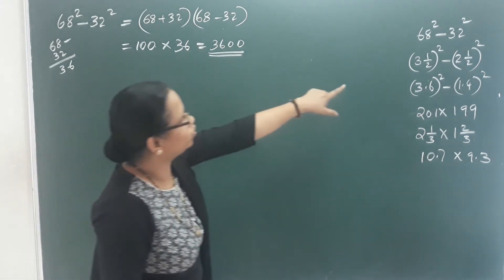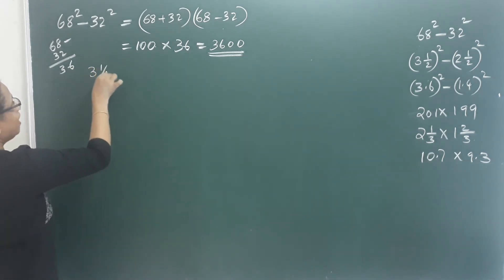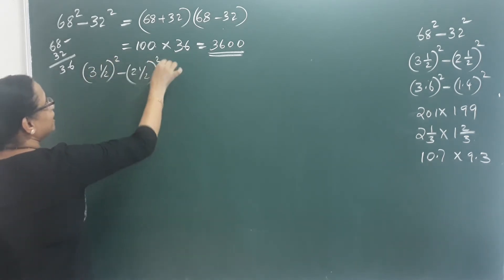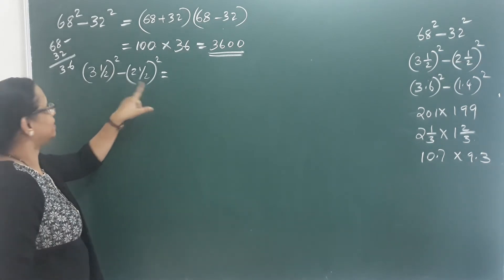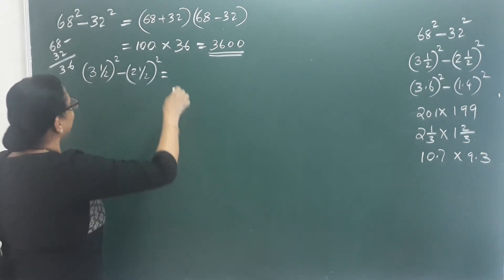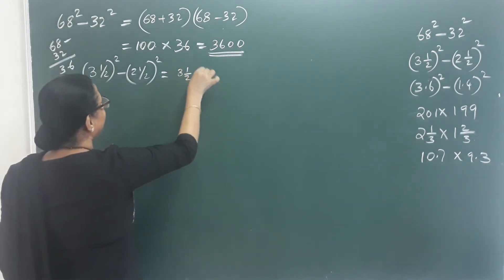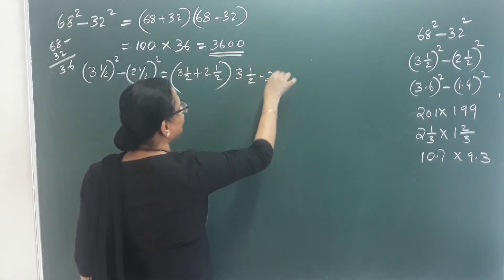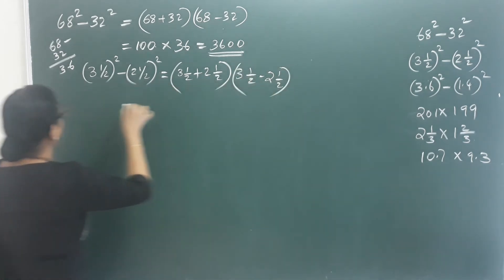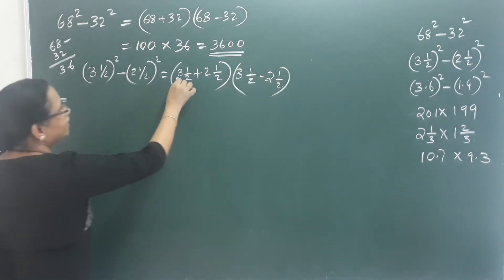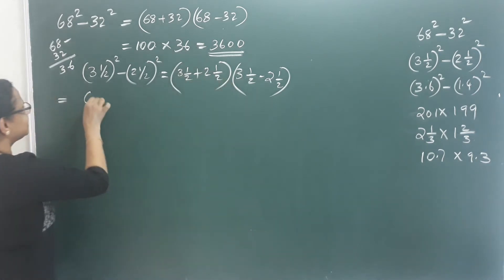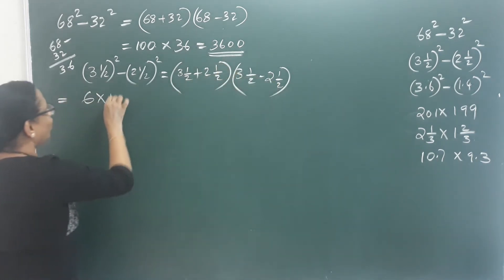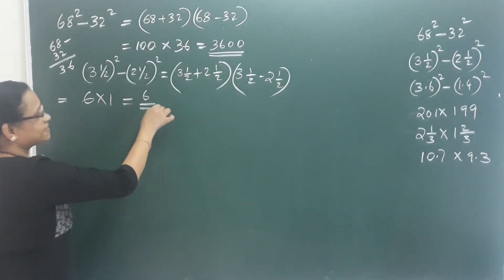Now let's see: 3 and a half square minus 2 and a half square. That means a plus b into a minus b — so 3 and a half plus 2 and a half is 6, and 3 and a half minus 2 and a half is 1. So 6 into 1 equals 6. The answer is 6.